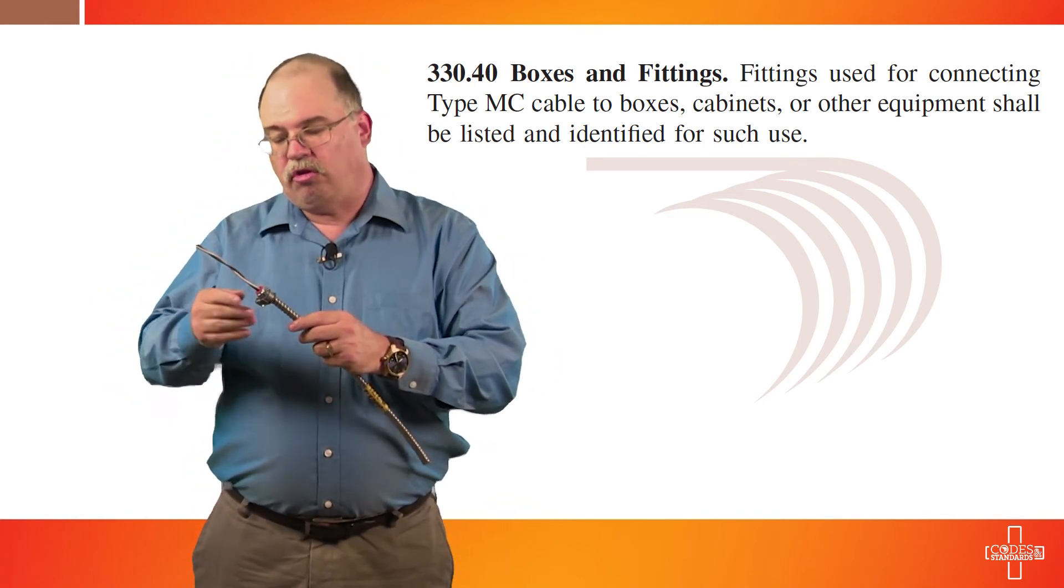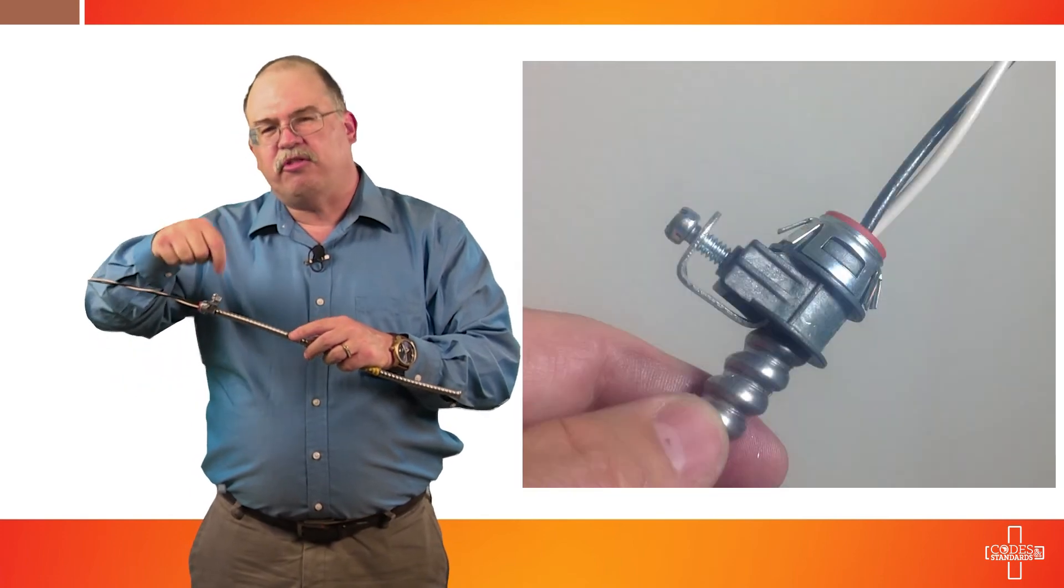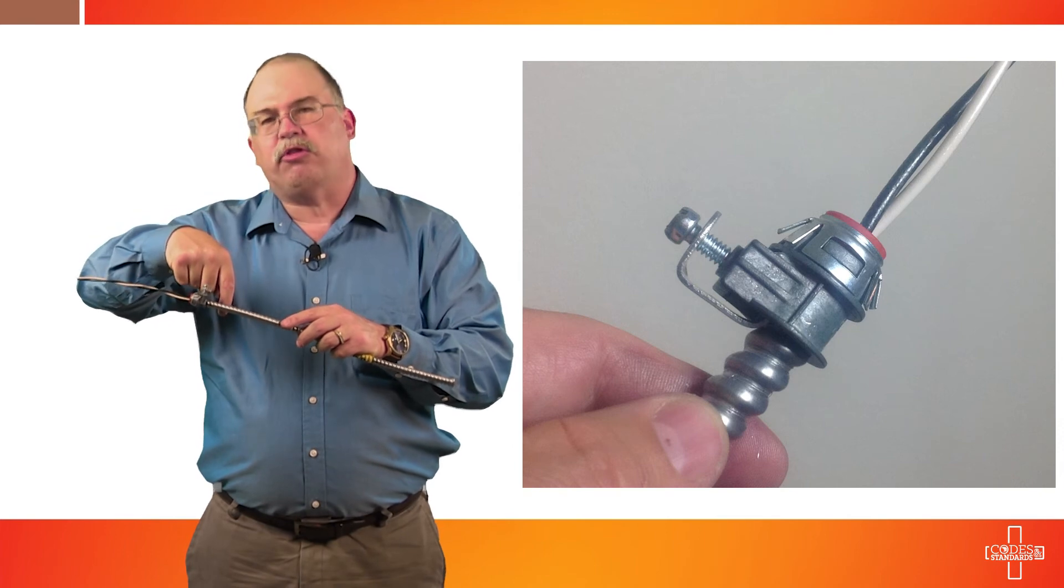You'll also notice that this has a saddle back design. Since the product we're dealing with here today is a Smart Ground and has an aluminum jacket, then you want to use a saddle back type fitting. You don't want to use a set screw type because if you tighten the set screws tight, the screw will penetrate through the aluminum and potentially damage the interior conductors. If this was a steel metallic sheathing, that would be okay. This is aluminum, so you want to use a saddle back type connector. When you tighten it down, the saddle actually presses against the metallic sheathing and pushes it against the fitting. That allows for even contact and achieves that MCI-A trait that's needed to create a complete system for that effective ground fault current path.